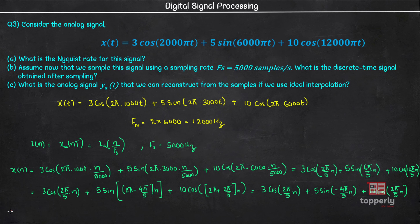After simplifying using aliasing identities, the final discrete time expression is x(n) = 13 cos(2π/5 × n) − 5 sin(4π/5 × n). This is our discrete time signal obtained after sampling at 5 kHz.